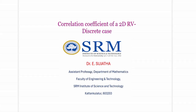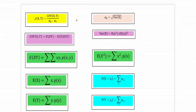Hello friends, welcome to this video on correlation coefficient of a two-dimensional random variable. We are going to estimate the correlation coefficient for a discrete case problem. The correlation coefficient rho of x comma y is defined by covariance of x comma y divided by sigma x sigma y. This is the base formula required for estimation of our correlation coefficient.